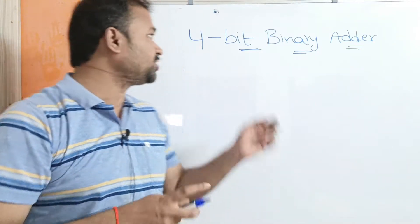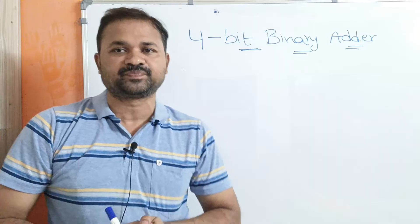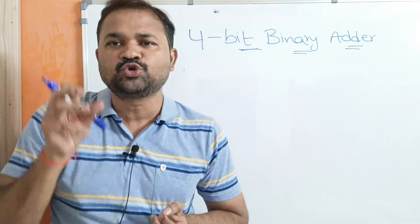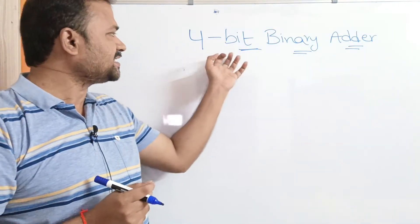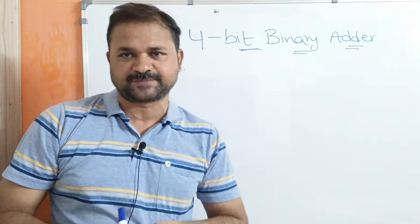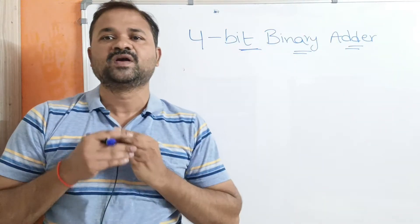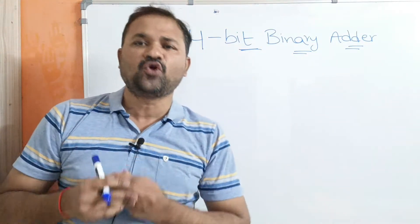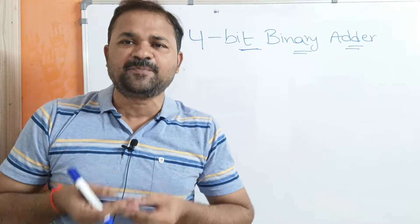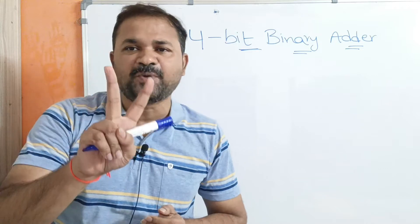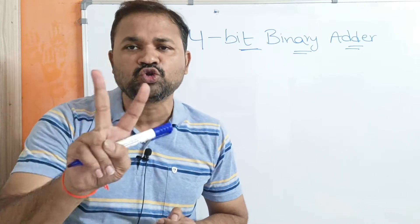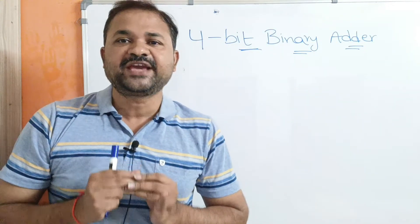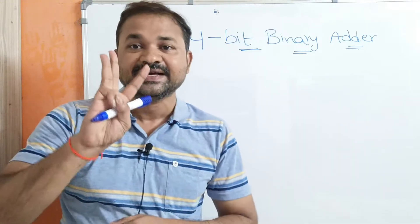Let us discuss the 4-bit binary adder. A binary adder is mainly useful in order to add two binary numbers, where the size of a binary number is 4 bits. With the help of a half adder, we can perform addition on 2 bits, whereas with the help of a full adder, we can perform addition on 3 bits.